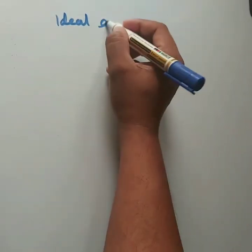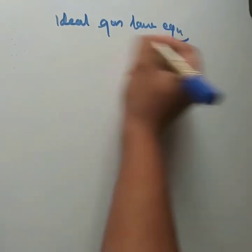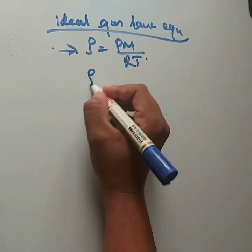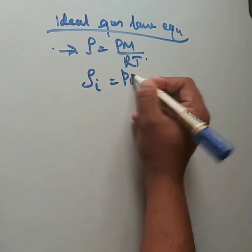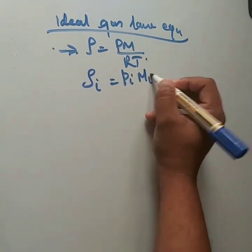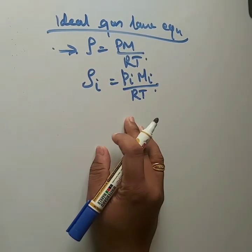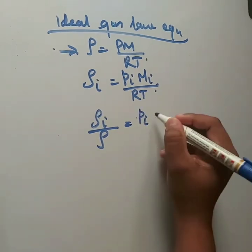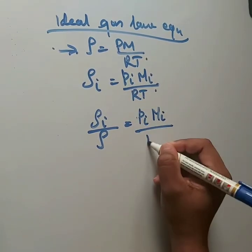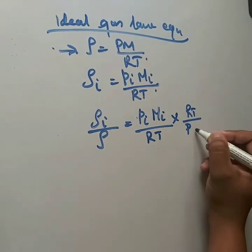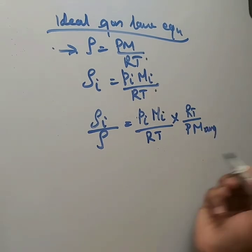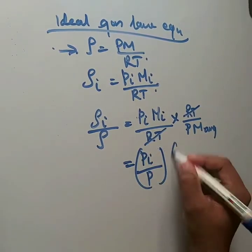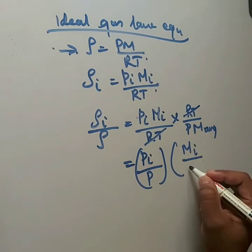From the ideal gas law equation, we formulate: ρ = PM/RT. For the ith species: ρᵢ = pᵢMᵢ/RT, where pᵢ is the partial pressure and Mᵢ is the molecular weight. Dividing ρᵢ by ρ, we get (pᵢMᵢ/RT) divided by (PM_avg/RT). RT cancels, giving ρᵢ/ρ = (pᵢ/P) × (Mᵢ/M_avg), which equals the mole fraction of the ith species times its molecular weight divided by the average molecular weight.